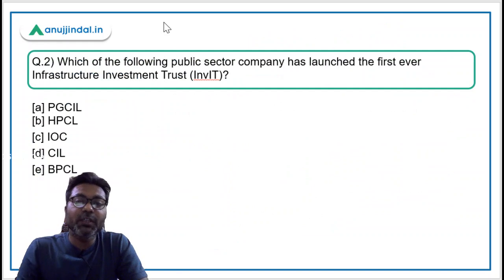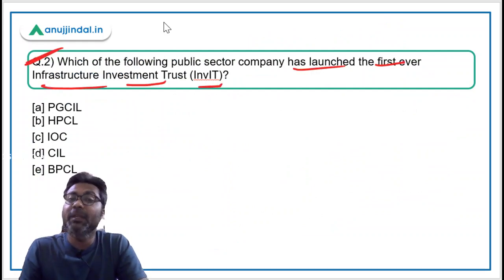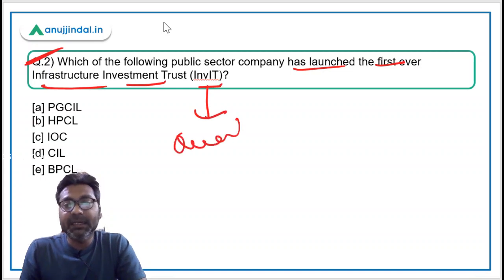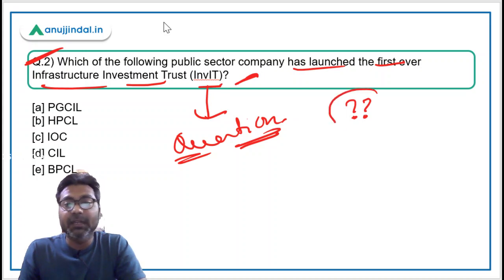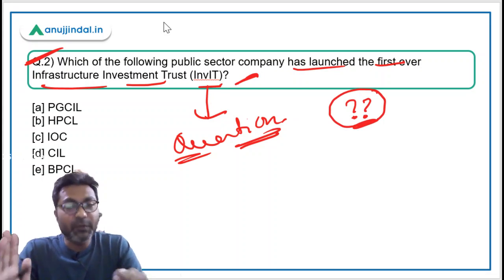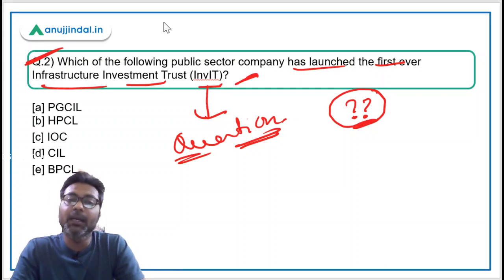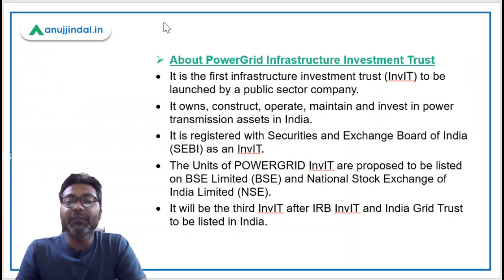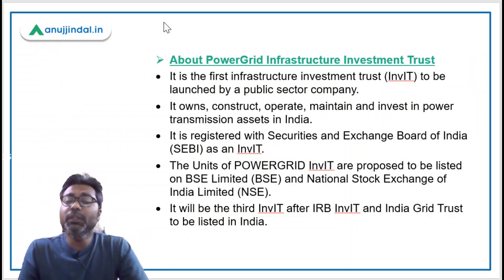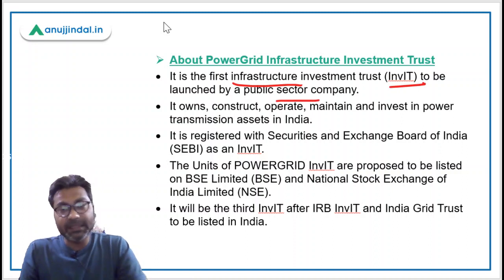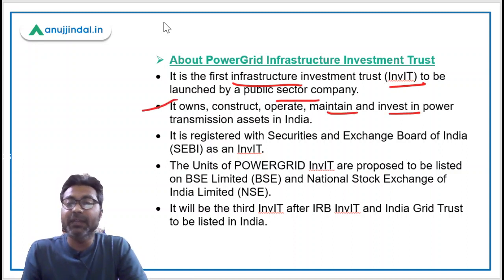Question 2: Which public sector company has launched the first-ever Infrastructure Investment Trust? Since you are preparing for RBI Grade B, you must know finance. InvIT — Infrastructure Investment Trust — is an important term. Write in the comments what an InvIT means. Power Grid Corporation of India Limited, PGCIL, has become the first public sector company — in fact the first Maharatna company — to issue an Infrastructure Investment Trust. It will own, construct, operate, maintain and invest in power transmission assets in India.